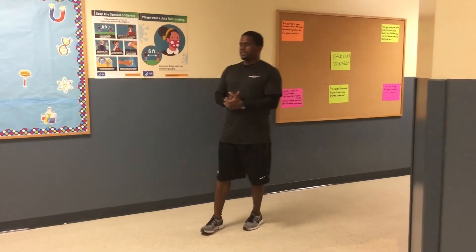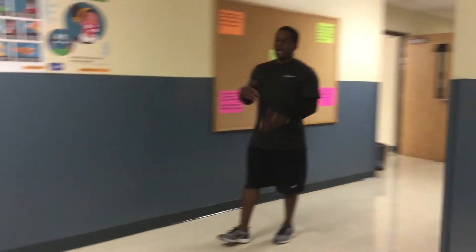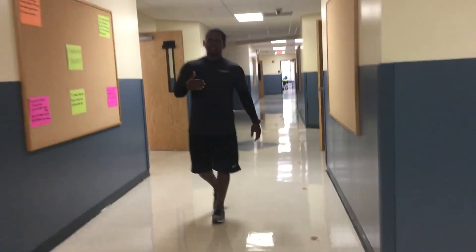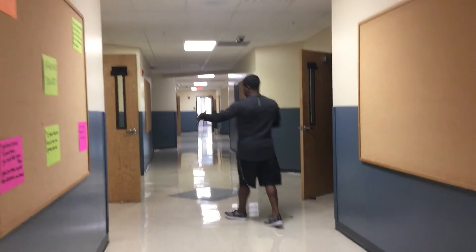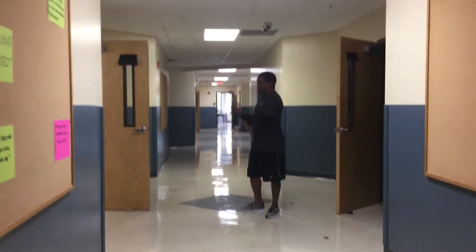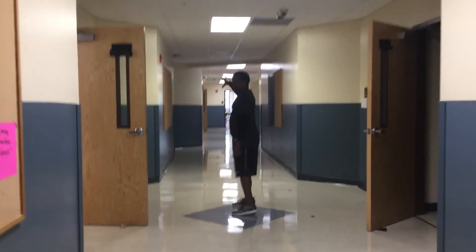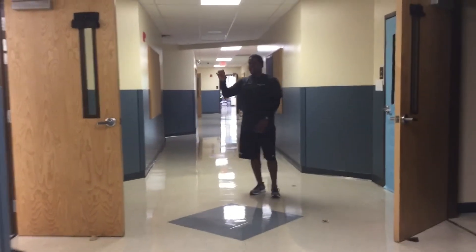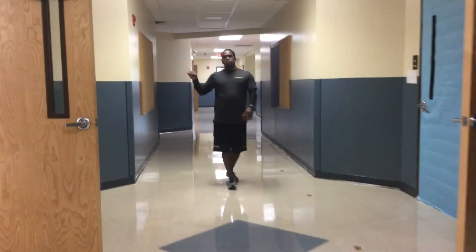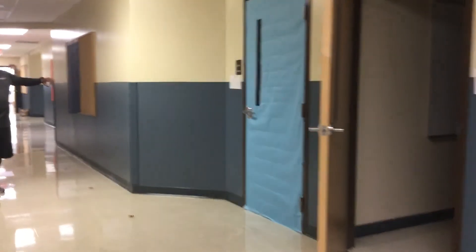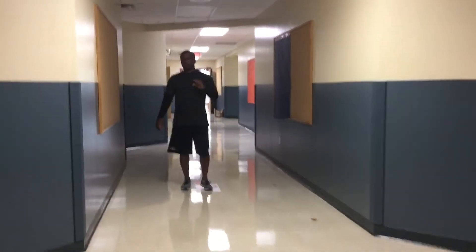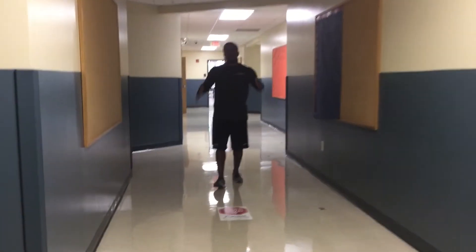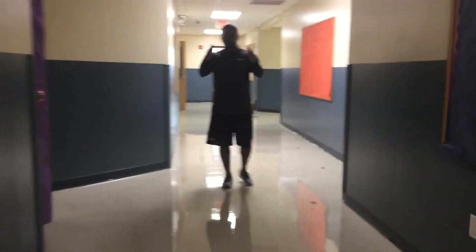Now that we're actually in the middle school hallway, how we have it set up here is that the first three classrooms on the left-hand side, if you're going around the hallway, are sixth grade classrooms. The next three are seventh grade classrooms. And the three on this side are actually our eighth grade classrooms. So mainly all the students you see in this hallway are our middle school students.